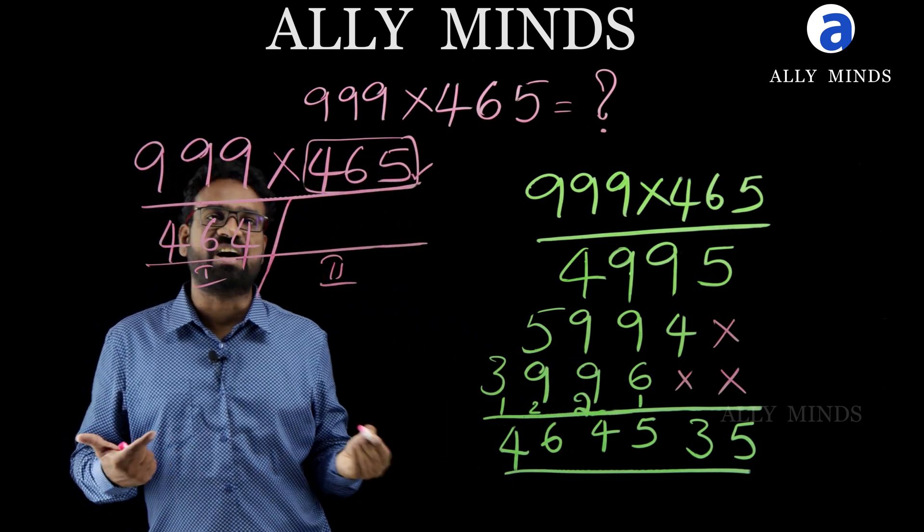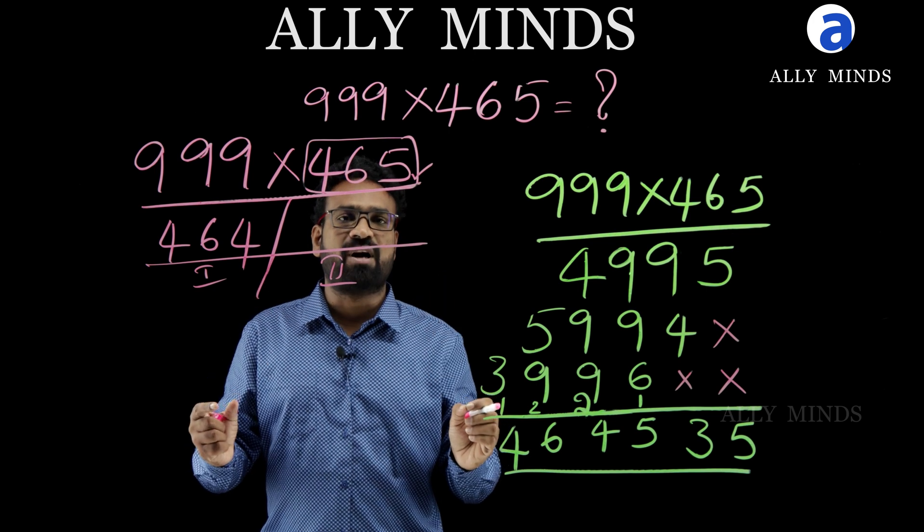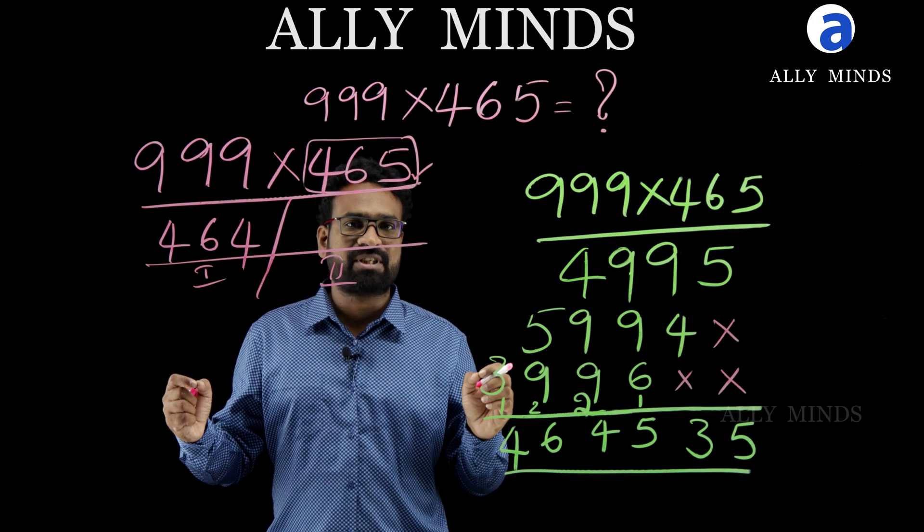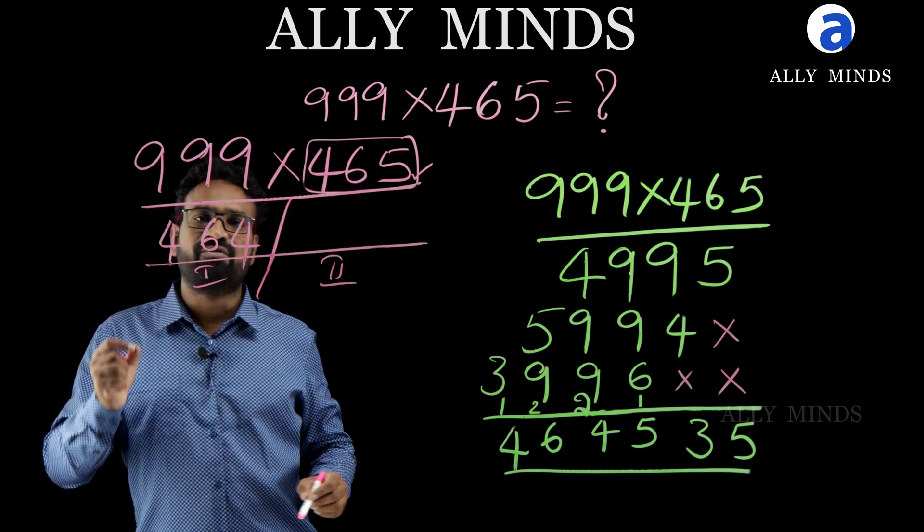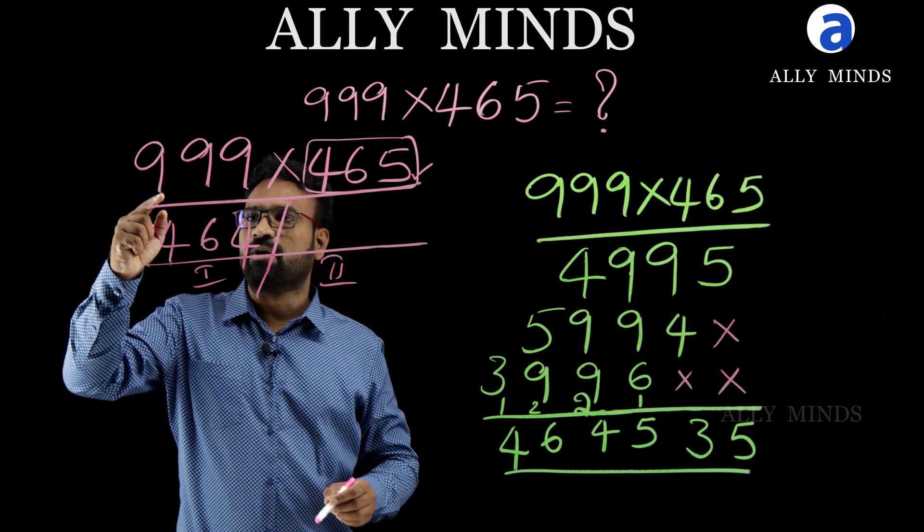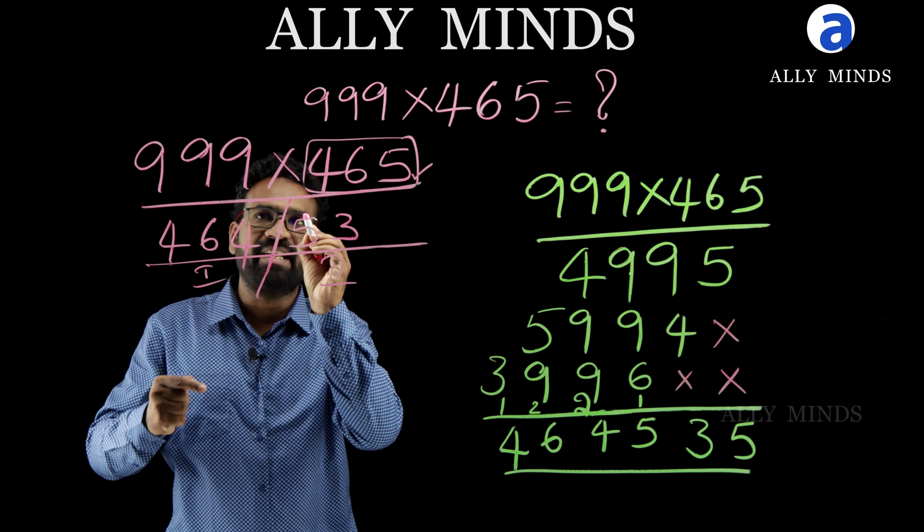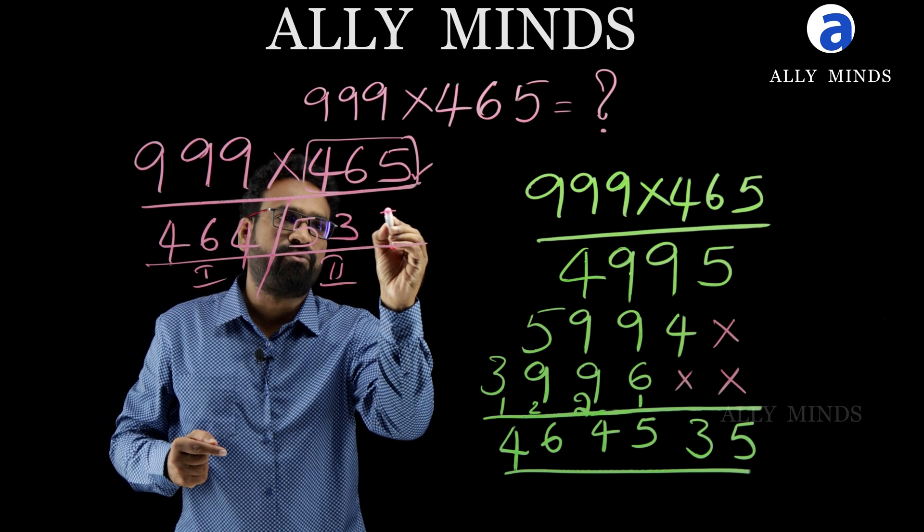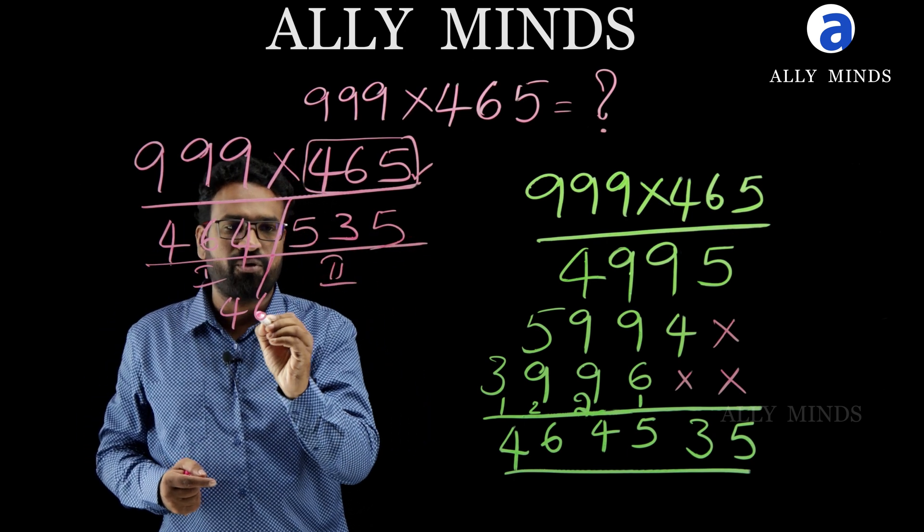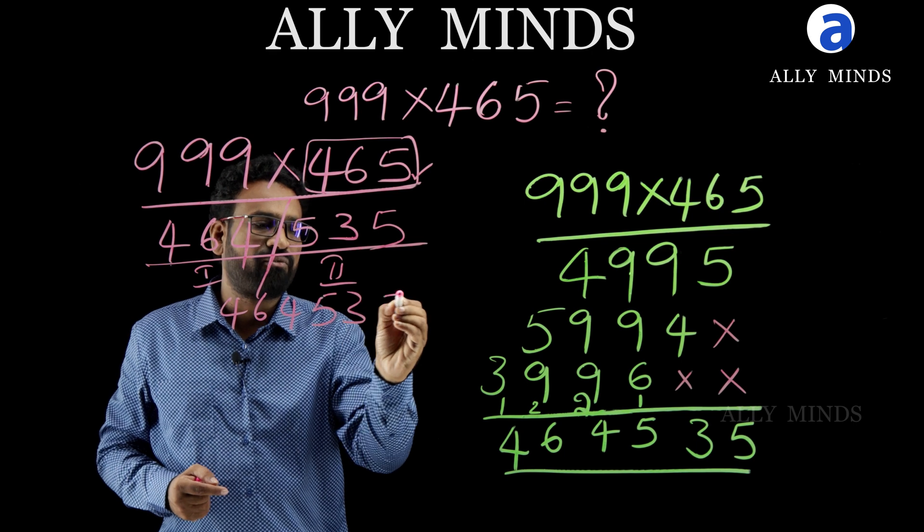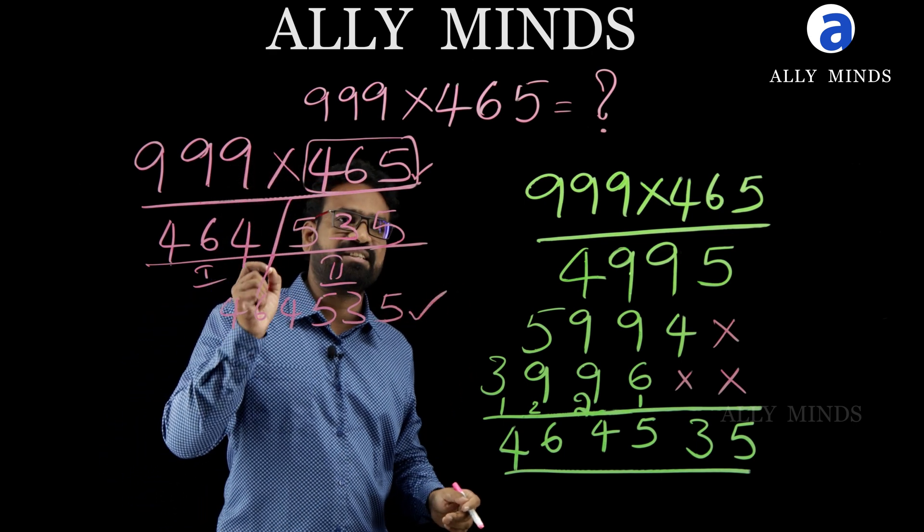This is the first part of the answer and for second part, what we have to do is, we have to subtract each and every digit of this first part from 9. Now, 9 minus 4 is 5 and 9 minus 6 is 3 and 9 minus 4 is 5. So, 464535 is our final answer. See, we got this answer in single line.